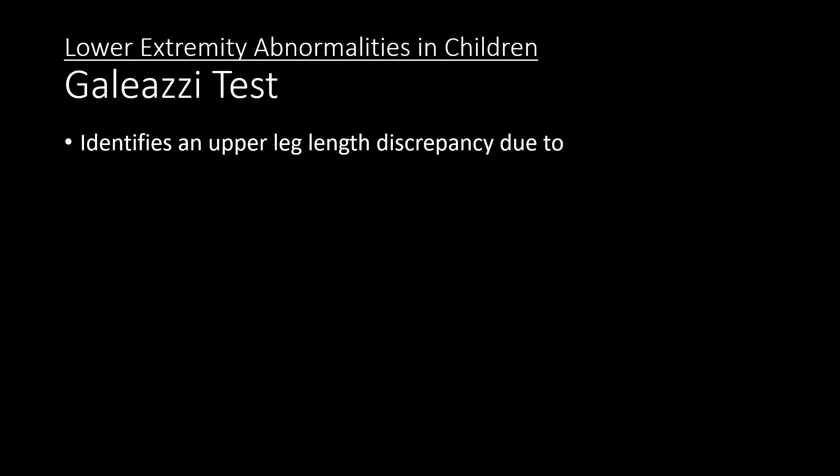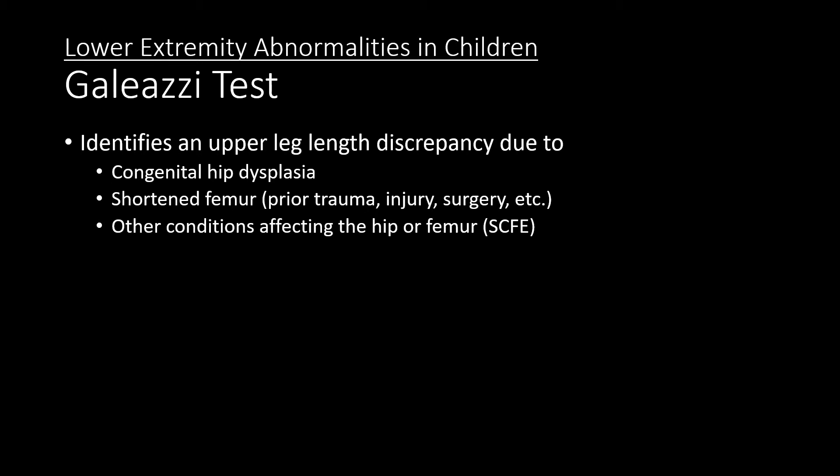This video will demonstrate how to perform the Galeazzi test when assessing lower extremity abnormalities in children. The Galeazzi test can identify an upper leg length discrepancy, which may be due to congenital hip dysplasia, a shortened femur, or other conditions affecting the hip or femur, such as SCFE, or slipped capital femoral epiphysis.